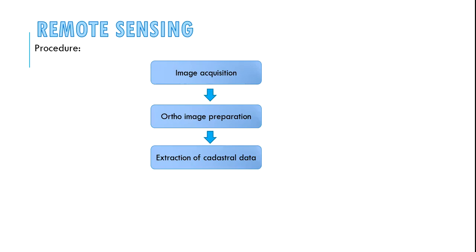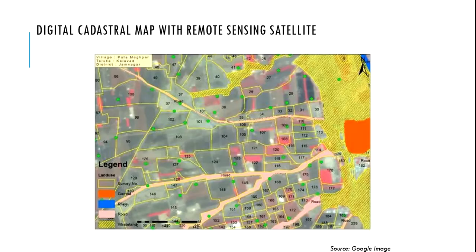Remote sensing — similarly, remote sensing is the latest method, under which high-resolution satellite images are initially acquired and then these images are converted to orthophoto to extract the cadastral map. Here is an example of the map prepared from the remote sensing satellite.